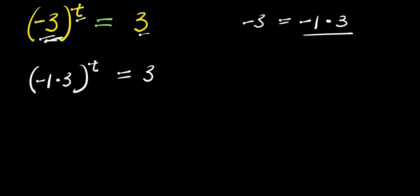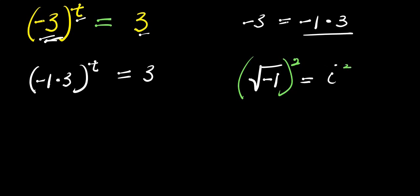Now let's consider this complex identity. If you have square root of negative 1, this equals i — that is the imaginary number i. So if I take the squares of both sides, this eliminates the square root, so I have negative 1 equals i squared. So that means I'm going to replace this negative 1 with i squared.